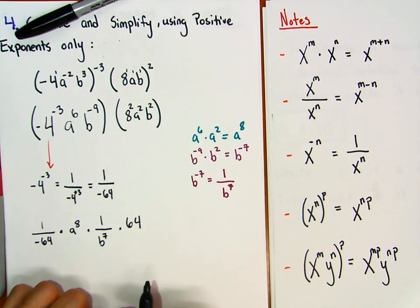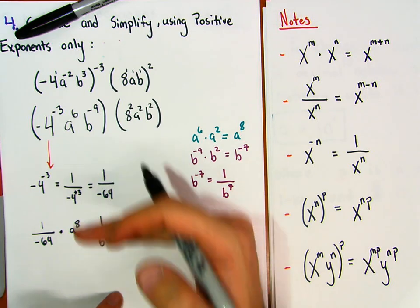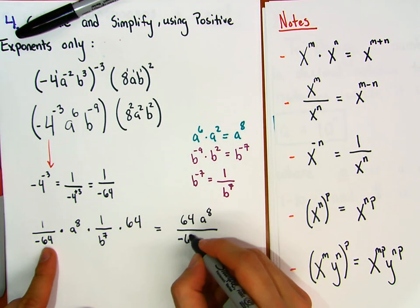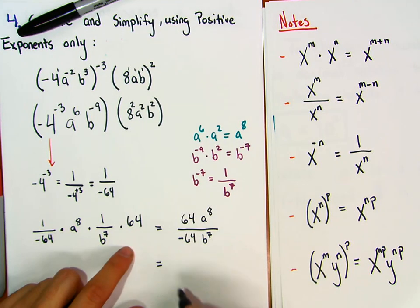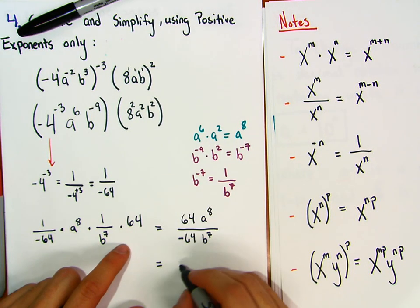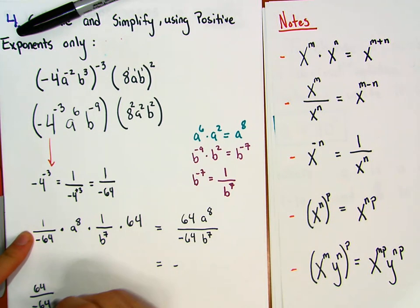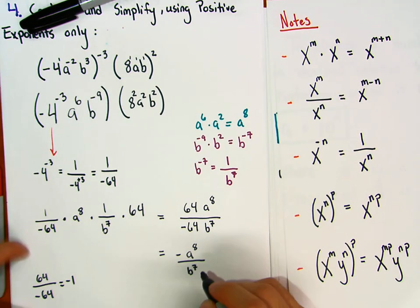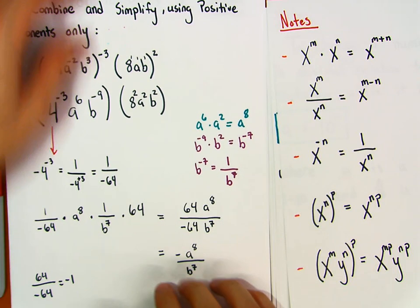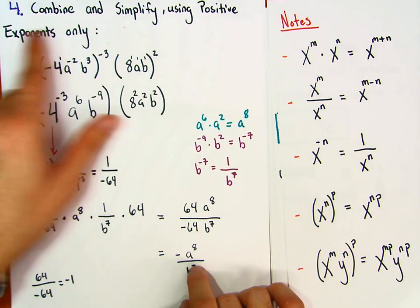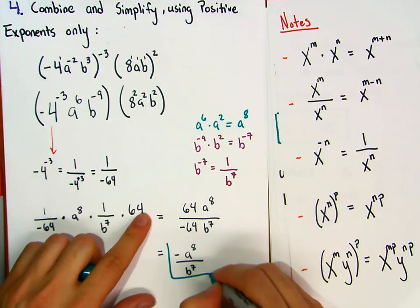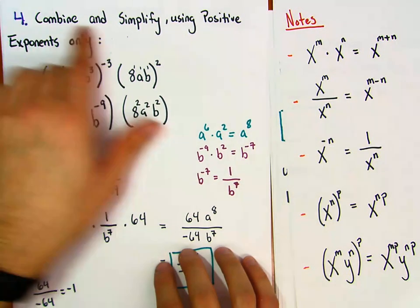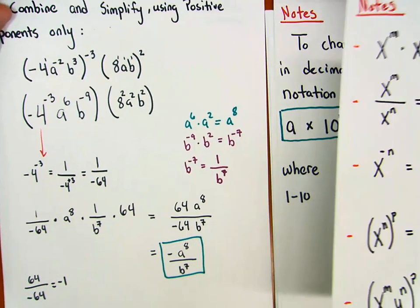Eight squared is 64. So the numerator is 64 times a to the 8, and the denominator is negative 64 times b to the 7. Sixty-four divided by negative 64 equals negative 1, so the final simplified expression is negative a to the 8 divided by b to the 7 — written with positive exponents only.